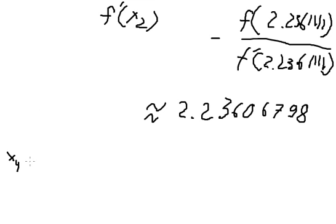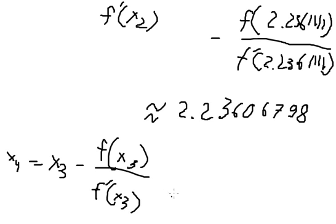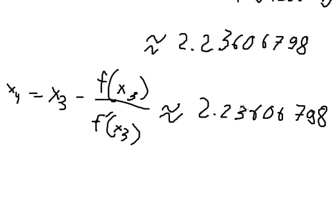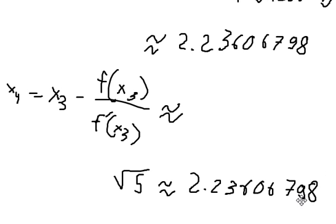Now we do the same technique for x₄, and this is approximately the same as x₃. So because this one is the same as this one, the square root of 5 is approximately this number here. This is the end, thank you for watching.